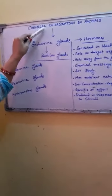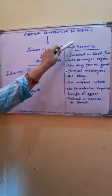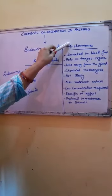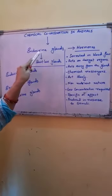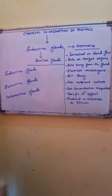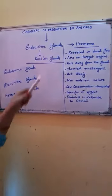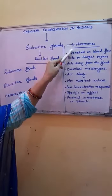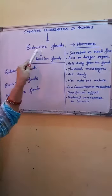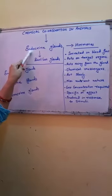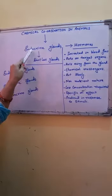In animals, chemical coordination takes place with the help of hormones. Hormones are chemical messengers — chemical substances which are secreted by special glands called endocrine glands. These hormones are chemical substances, or informational molecules, which are produced in these endocrine glands.